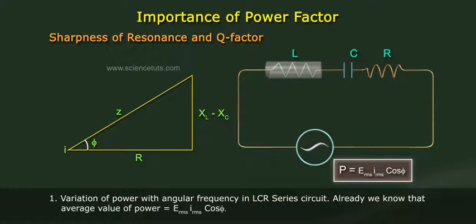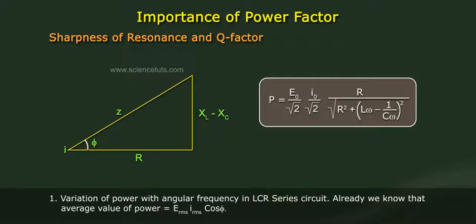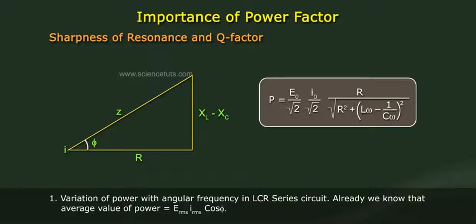P equals (E₀/√2) × (I₀/√2) × R divided by the square root of [R² + (Lω − 1/Cω)²].